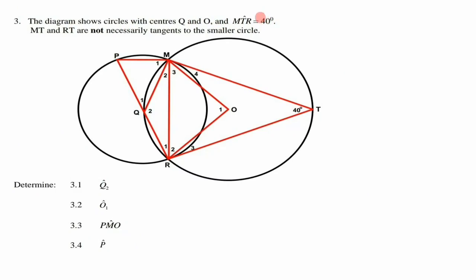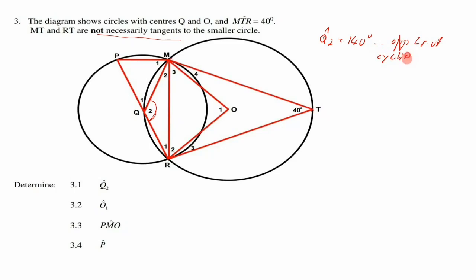Question 3: Two circles with centers Q and O; angle MTR = 40°. MT and RT are not tangents to the smaller circle. For 3.1, find Q2. Looking at the bigger circle, MQRT is a cyclic quadrilateral. Opposite angles of a cyclic quad are supplementary, so Q2 = 180° − 40° = 140°.